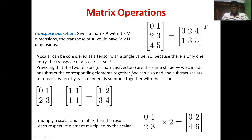Tensors with the same shape can be added or subtracted from corresponding elements present at specific locations. That means if this is a two by two matrix, we can perform addition or subtraction only with other two by two matrices.